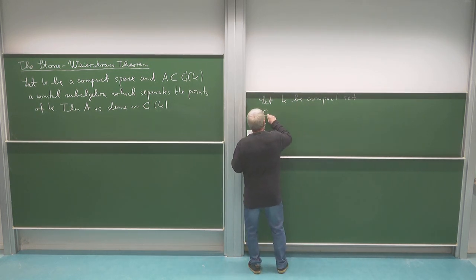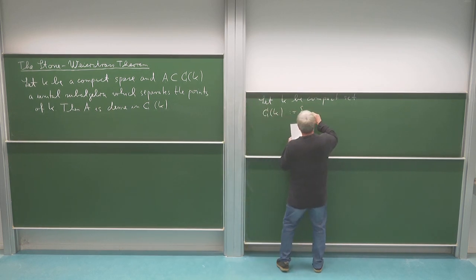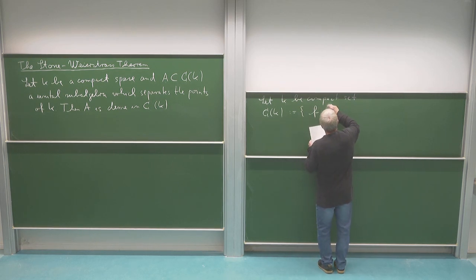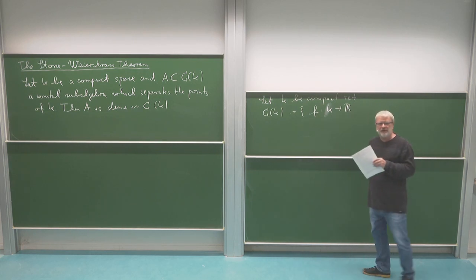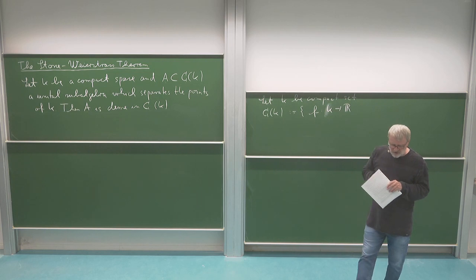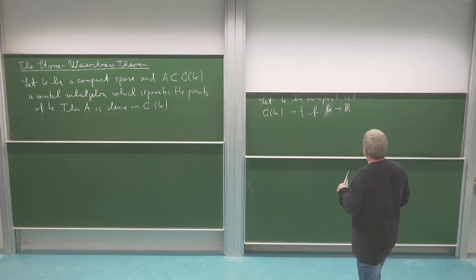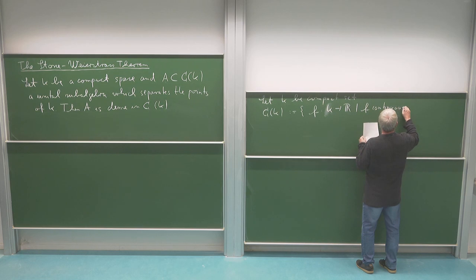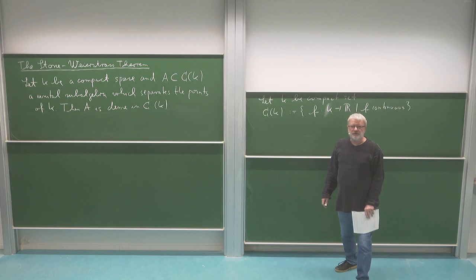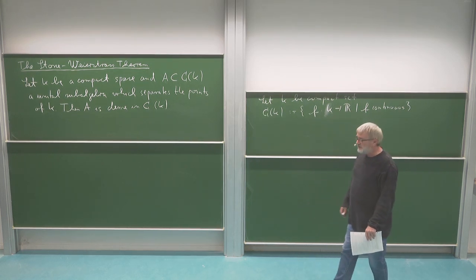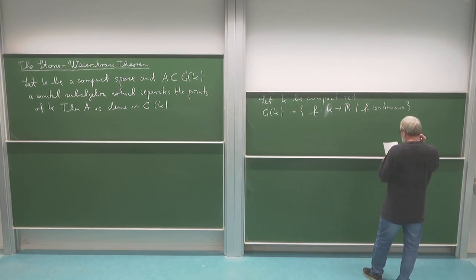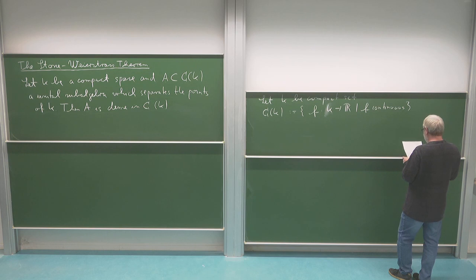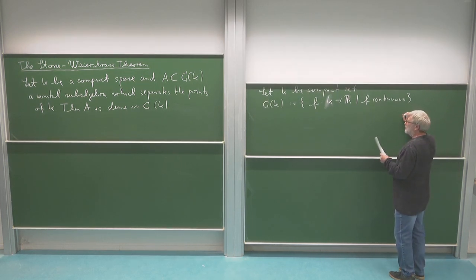We consider C of K, and we know this is a Banach space. C of K consists of functions from K to R — I consider the real-valued situation for now, and later I will give a version in the complex case. For the proof it's better to work with the real-valued version. So I consider functions from K to the real numbers which are continuous. Continuity is defined in the most general topological setting in terms of open sets.